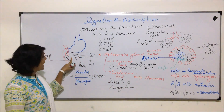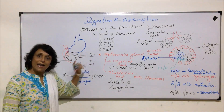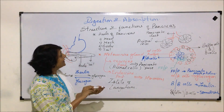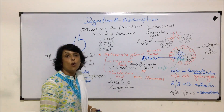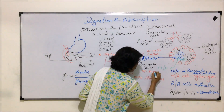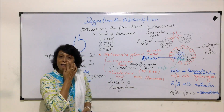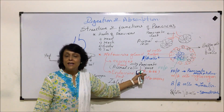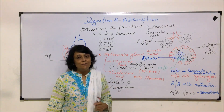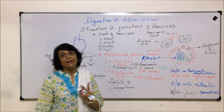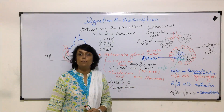Externally, the pancreas has four parts: the head, which is fitted into the bend of the duodenum; the neck, a narrow region; the body, the main part; and the tail. Pancreatic juice is also basic, with a pH of about 8 to 8.8 — bile is basic and so is pancreatic juice. It contains all three types of enzymes: amylases, proteases, and lipases. With this, we have understood the elementary canal and the associated glands — liver, its functions, pancreas and its functions. From the next section, we will start with the process of digestion.